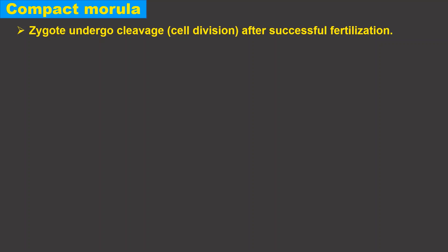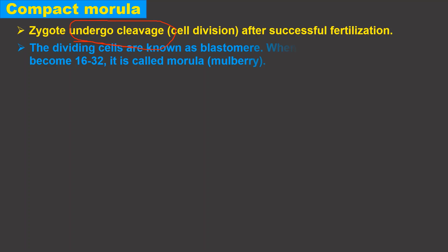Compact morula: after successful fertilization, when the embryo undergoes cleavage, the cells produced as a result of cleavage are called blastomeres. When the blastomere number reaches 16 to 32, that structure is called morula, or mulberry.